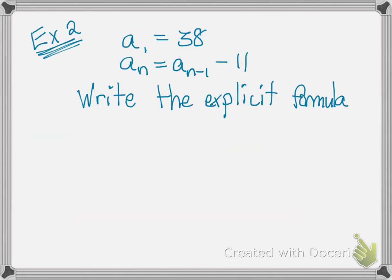Let's look at another example. Same thing here. My first term is 38, and my common difference is negative 11. So I can write out my explicit formula to be a sub n equals 38 minus 11 times n minus 1.